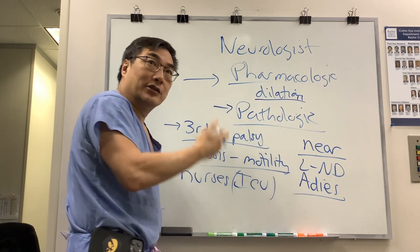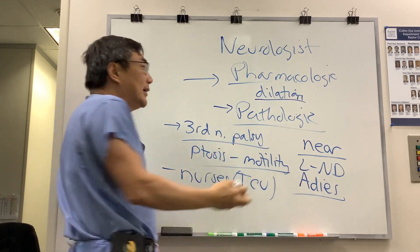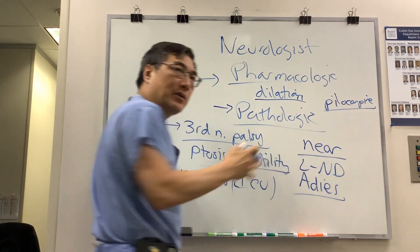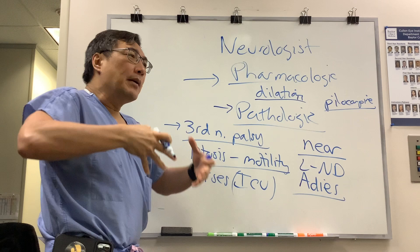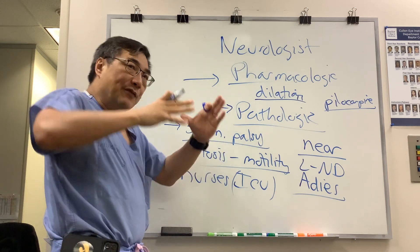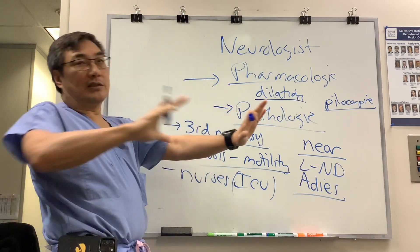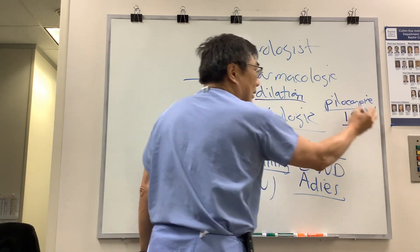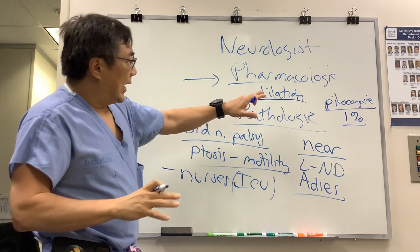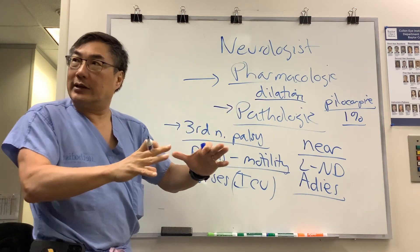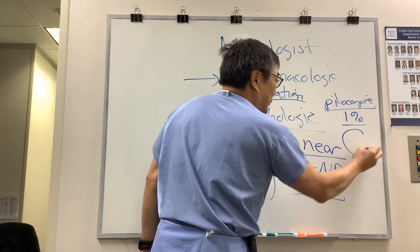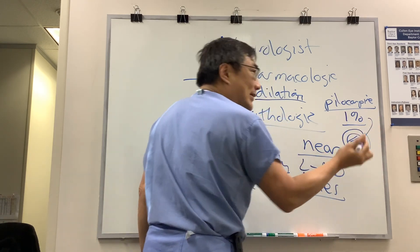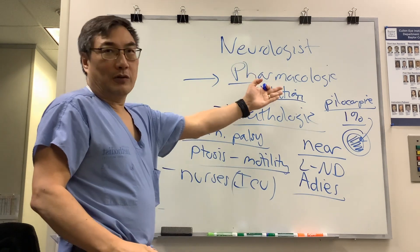To determine whether dilation is pathologic or not, you need a pharmacologic history, but if you don't have one, you can use a drop to determine whether the pupil is blocked. That drop is pilocarpine — a direct-acting parasympathomimetic. If the pupil doesn't constrict, the receptors are blocked. With 1% pilocarpine applied to a pharmacologically dilated pupil, it won't constrict, confirming the diagnosis.